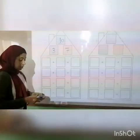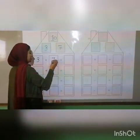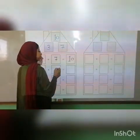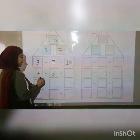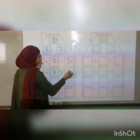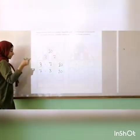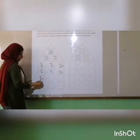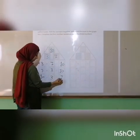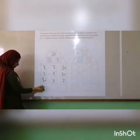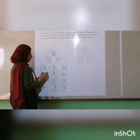Here, 3 plus 7 gives me 10. In another way, 7 plus 3 gives me the same result: 10. For subtraction, we start with the biggest number, 10. So 10 minus 3 gives me 7, and in another way, 10 minus 7 gives me 3.